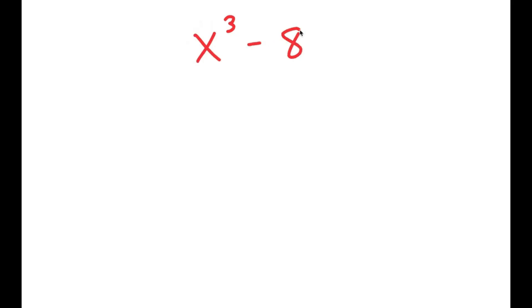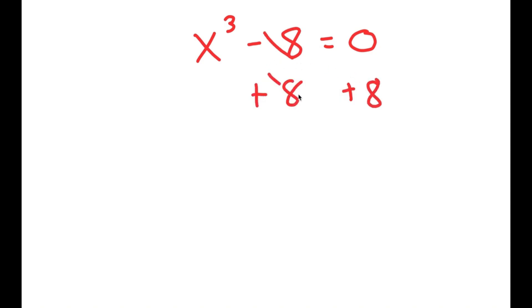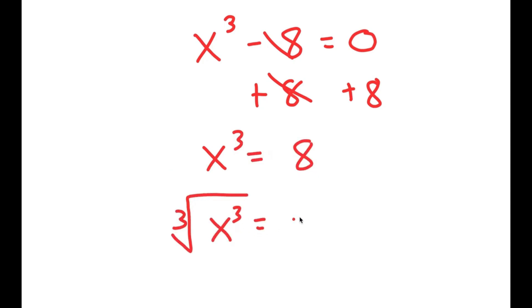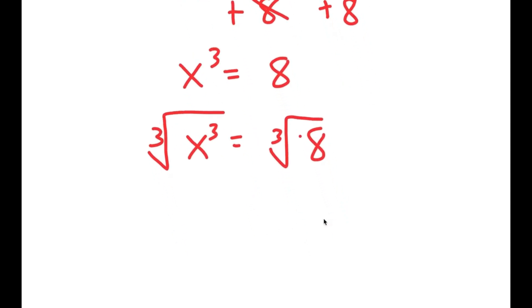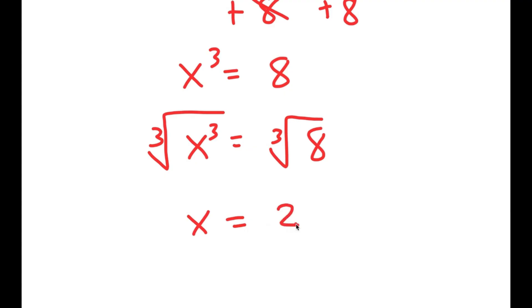In this video I'm going to solve the equation x to the power of 3 minus 8 equals 0. The way most people solve this is by adding 8 on both sides to get x^3 equals 8, then taking the cube root on both sides. The cube root of x^3 is x and the cube root of 8 is 2, so they get x equals 2, which is a solution.